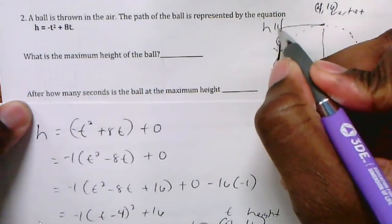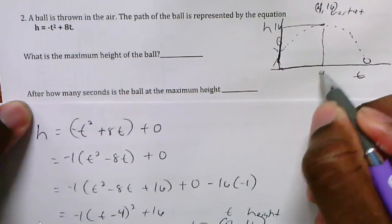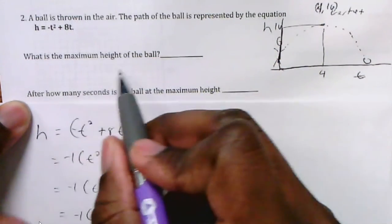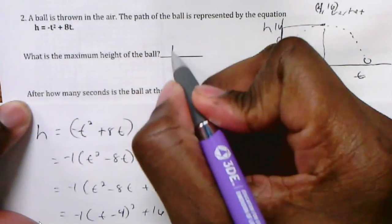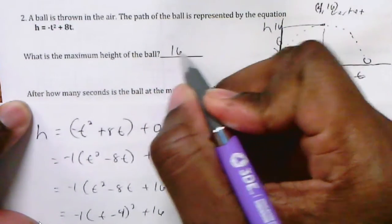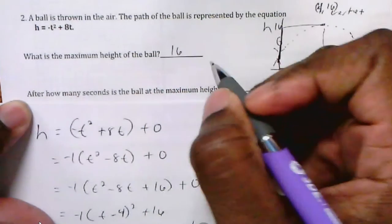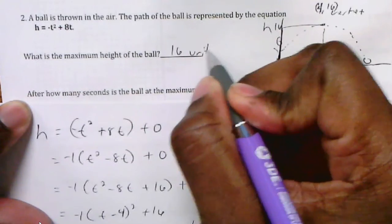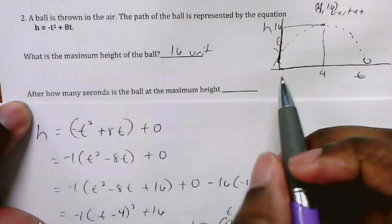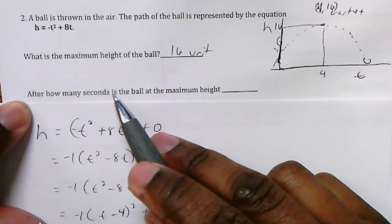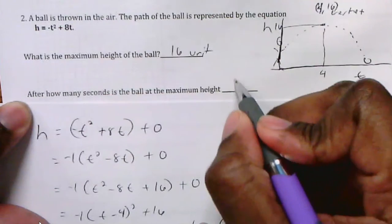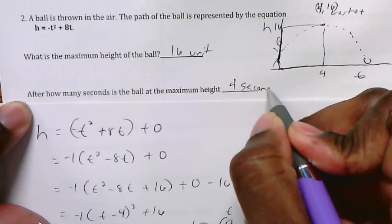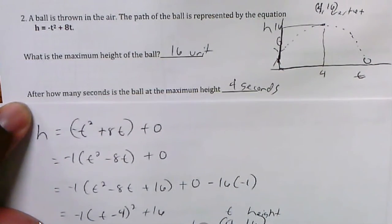So I know my height is at 16 and that time across is 4. What's the maximum height of the ball? The maximum height is 16 feet. I'm assuming that's in feet. I'm going to call it 16 units because I don't know what the unit is. And how many seconds is the ball at its maximum height? It takes 4 seconds. So that answers number 2.